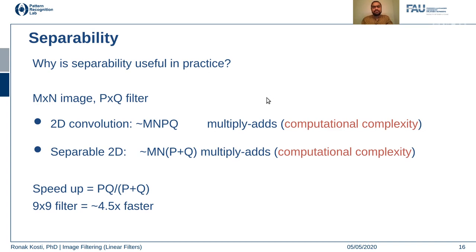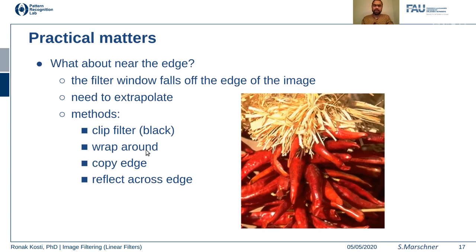Why is separability important? It saves computations. If you have an image of size m×n and a filter of size p×q, the number of computations is roughly m·n·p·q. If you have a separable 2D kernel and separate it, the speedup you get is almost 4.5 times faster. When you think about bigger images or processing thousands or millions of images per day as big companies like Facebook and Google do, this speedup is extremely important.